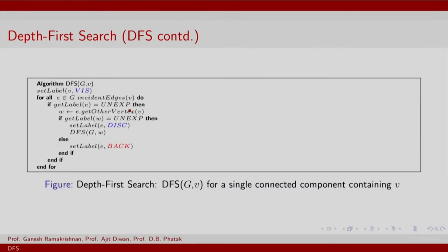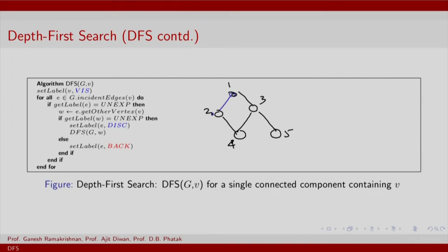DFS iterates over every node in the graph, and you begin with all the edges incident on the node. Here we begin with some nodes 1, 2, 3, 4, and 5. We begin with V, the first node, and look at all the edges incident on that first node. We get a W that is node 2. We look at the label of W — it is unexplored; all nodes in black are unexplored. So we set the label of edge E to discovery edge and also perform a DFS on node 2.